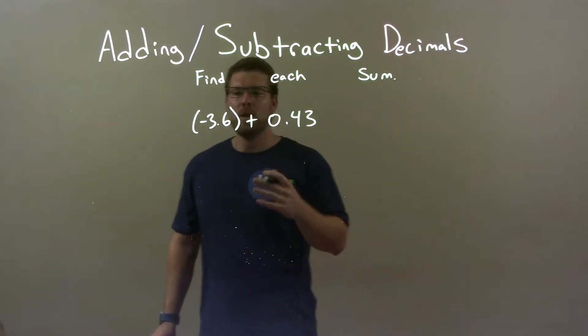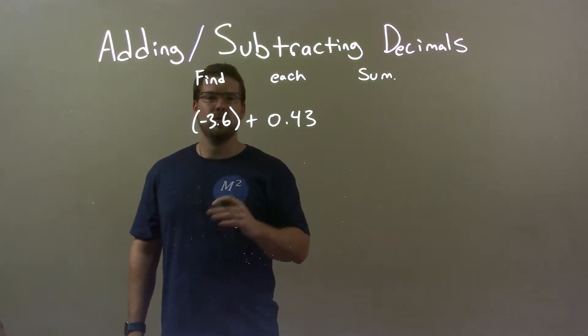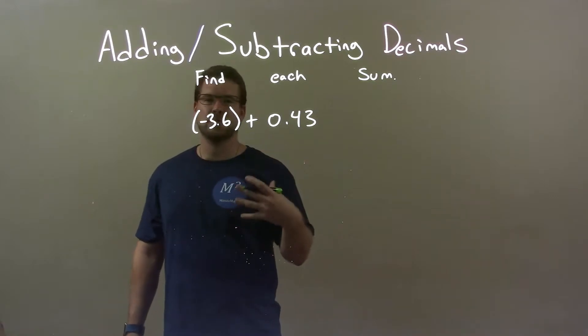So what we want to do, we're just going to find the difference between these two. But we know since this one's more negative, our final answer is going to be negative. So this is the larger number.